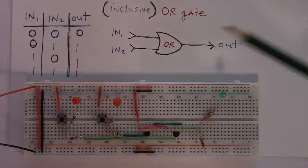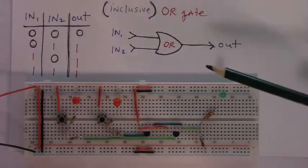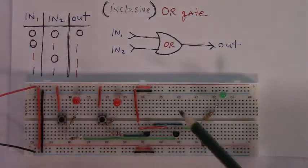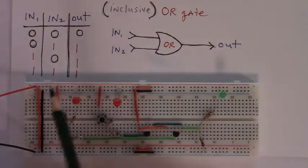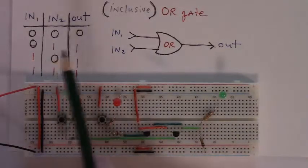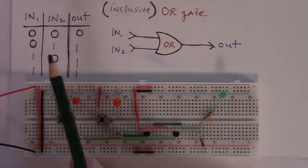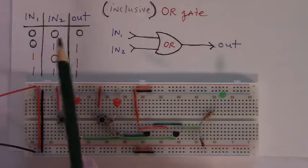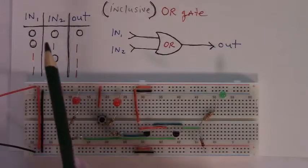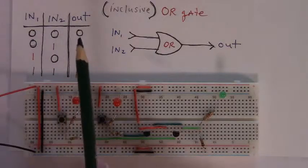In this video we'll be building an inclusive OR gate circuit using two NPN transistors. Recall that the functionality associated with an OR gate — here's its truth table — is that whenever both of its inputs are 0, or low, or false, its output is low.